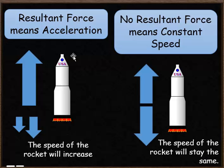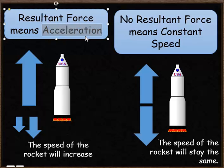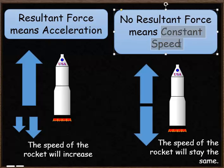Resultant forces don't tell you what direction an object is moving in — they tell you the direction of acceleration. It's really important to use the terms acceleration and constant speed when talking about resultant forces. If there is a resultant force, it means acceleration is occurring. If there's no resultant force, it means the object is moving at a constant speed.